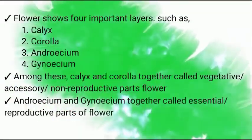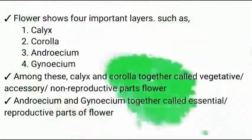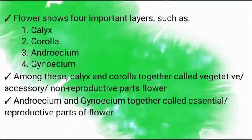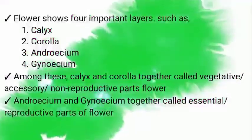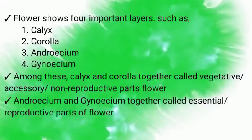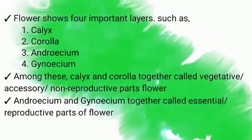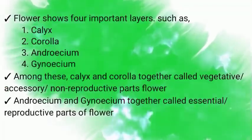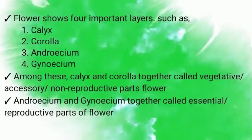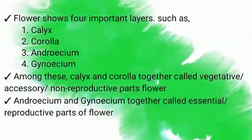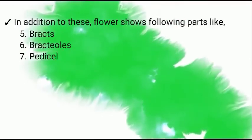Number 3, Androecium; and Number 4, Gynoecium. Among these four layers, Calyx and Corolla together are called vegetative, accessory, or non-reproductive parts of the flower. Androecium and Gynoecium together are called essential or reproductive parts of the flower. In addition to these, flowers also show the following parts: Bract, Bracteoles, and Pedicel.